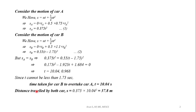The distance travelled by both cars when B overtakes A is S = S_A = S_B. Using equation 1: S = 0.375 × T² = 0.375 × (10.04)², giving a distance of approximately 37.8 metres.